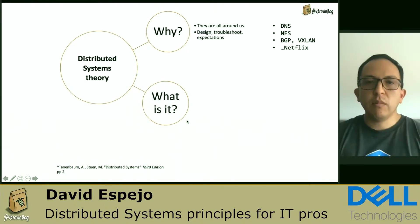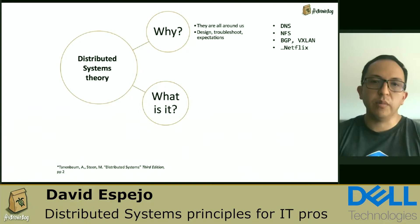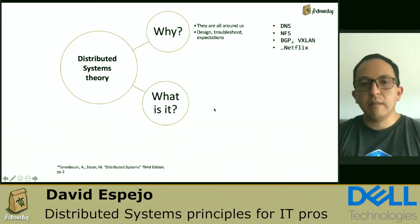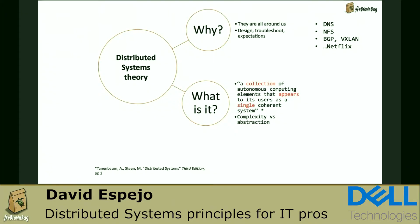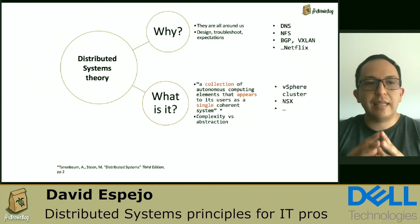What is a distributed system? For most of these definitions, I will reference the textbook by Professor Tanenbaum, who is very famous. He wrote several textbooks used throughout computer science schools around the world, and he provided some definitions for this topic. A distributed system is a collection of autonomous computing elements that appears to its users as a single system.